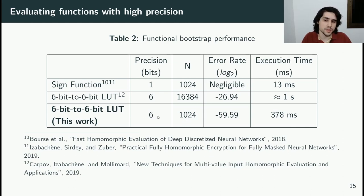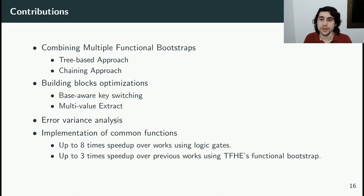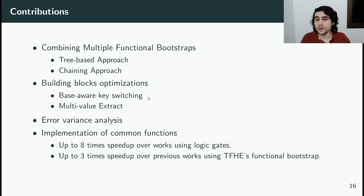With our approach, we can evaluate the 6-bit lookup table with a polynomial of only 1024 coefficients, achieving much better error rate and execution time. Our contributions include two methods to combine multiple functional bootstraps to evaluate large lookup tables without increasing cryptosystem parameters, optimizations to the core procedures, and a complete error analysis including experimental validation of both methods and optimizations.